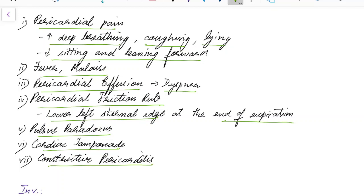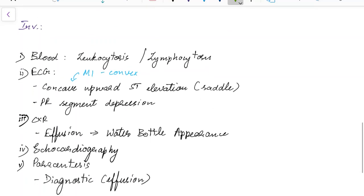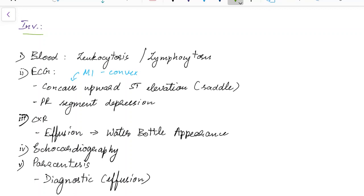Now let us see about the various investigations that we need to do for a case of acute pericarditis. Blood investigations can be done to reveal leukocytosis or lymphocytosis in infectious causes. ECG should be done. ECG reveals concave upward ST segment elevation which is saddle shaped. This is characteristic of acute pericarditis.